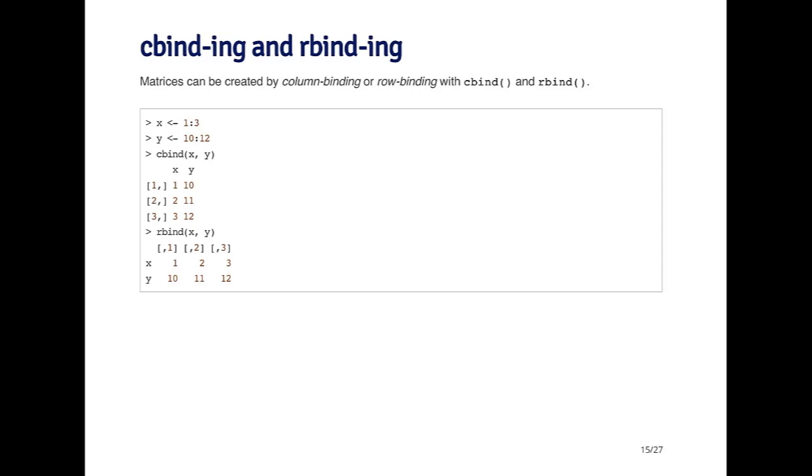If I rbind those two objects, the first row will be one, two, three, and the second row will be ten through twelve. So cbinding and rbinding is another way to create a matrix.